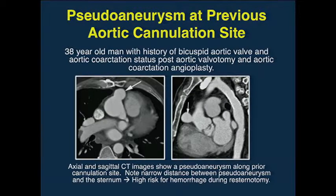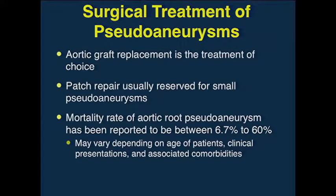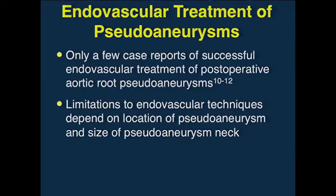In terms of delivering information to the thoracic surgeon, the mapping becomes very critical. Surgery still ends up being the treatment of choice. These are difficult patients and surgery at times is put off, but it invariably needs to get done—high morbidity and high mortality in these patients. People have looked at endovascular treatment of pseudoaneurysms; there are a few successful case reports in the literature, but it's typically not the standard of care.